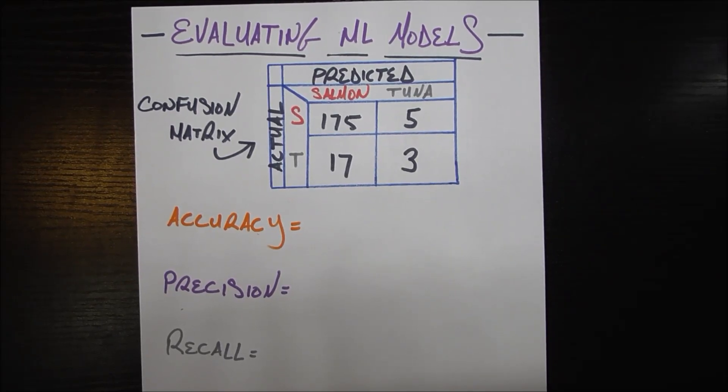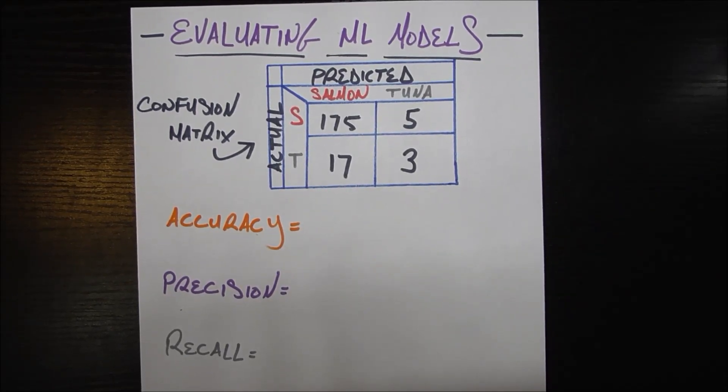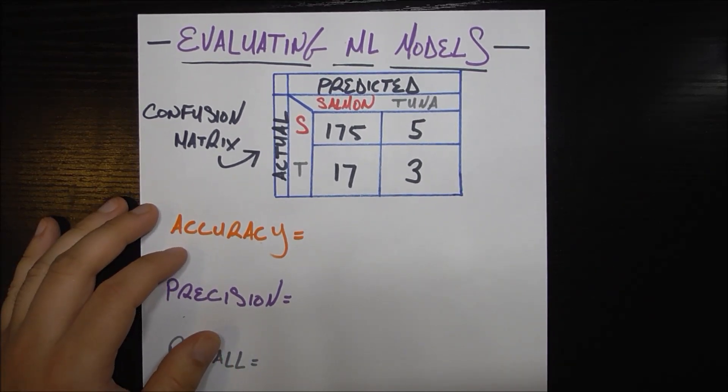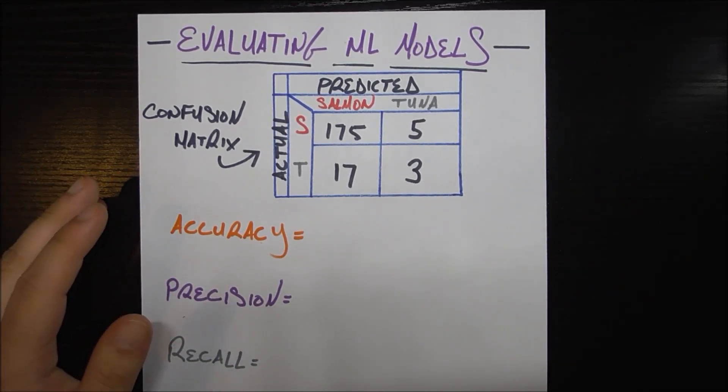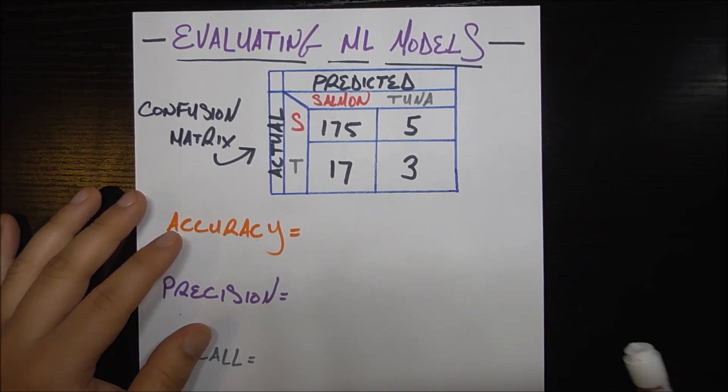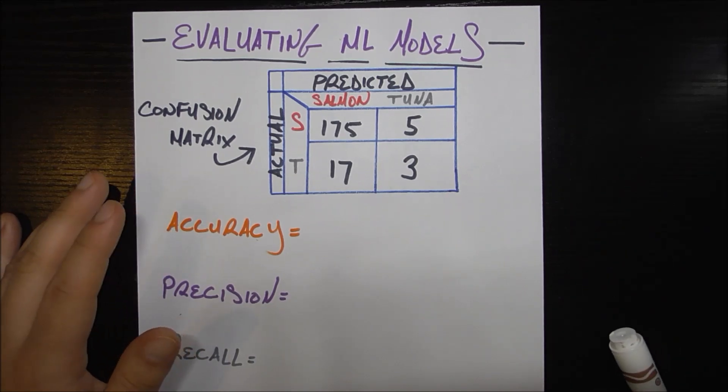In this video we're going to be talking about how to evaluate all the machine learning models that we've been learning about thus far. So many of the previous videos have been about how to run certain machine learning models, how they work, the certain intricacies about them, but what comes after that? You made your predictions about your unknown data points, but how do you know how good of a job you've done?